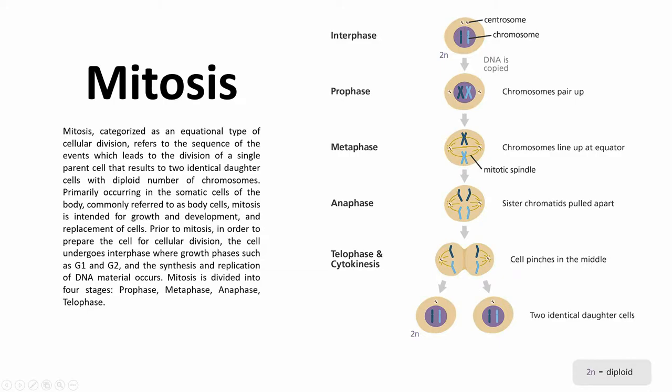Mitosis is intended for growth, development, and replacement of cells. Prior to mitosis, in order to prepare the cell for cellular division, the cell undergoes interphase, where growth phases such as G1 and G2, and the synthesis and replication of DNA material, occurs.